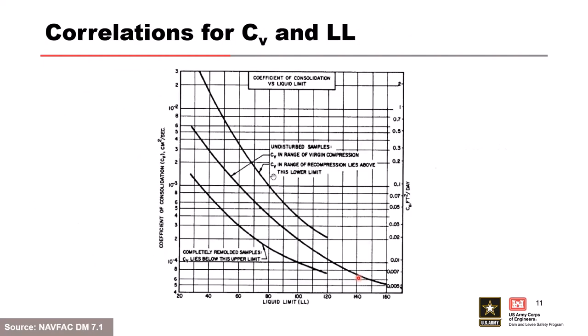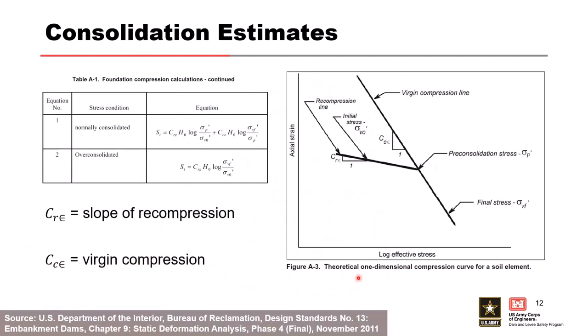C sub V is the time rate of consolidation. It's used more in other embankment situations — for example, where you need to preload a foundation. If you construct an embankment too quickly, you can significantly increase excess pore water pressures. The Leaning Tower of Pisa is a good example: it was constructed in stages, allowing pore pressures to dissipate between stages, which is why it leaned rather than fell over. Sometimes wick drains are used to accelerate that consolidation. This graph shows a relationship between liquid limit and C sub V.